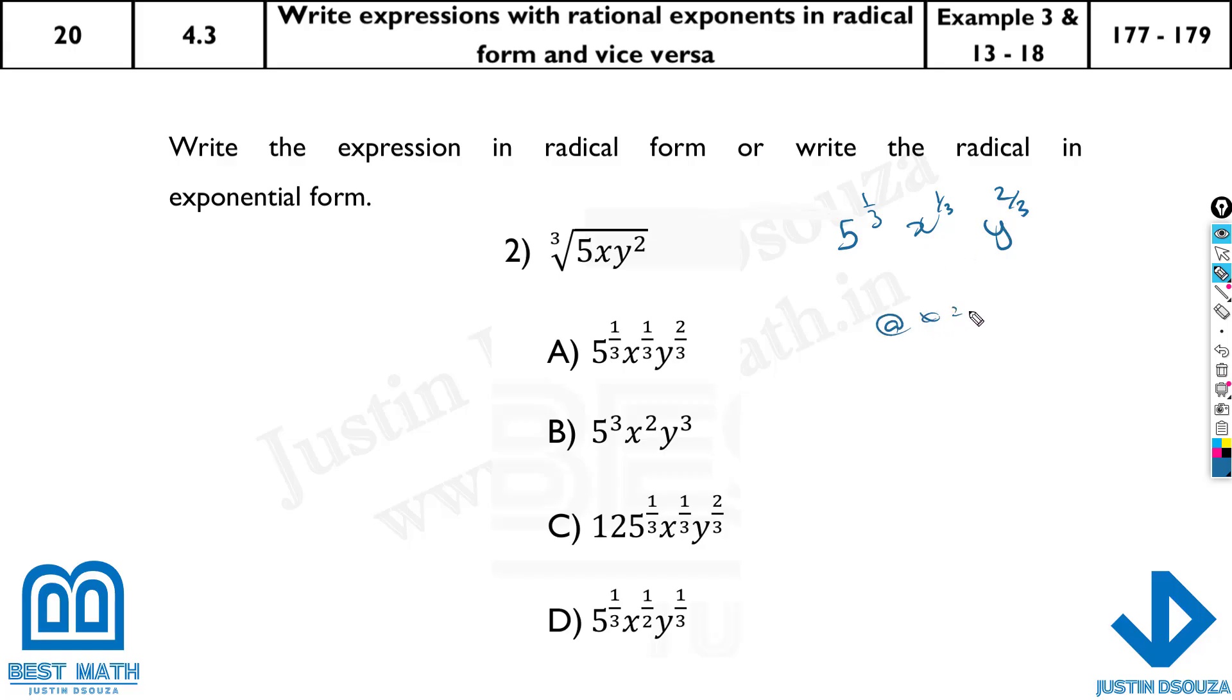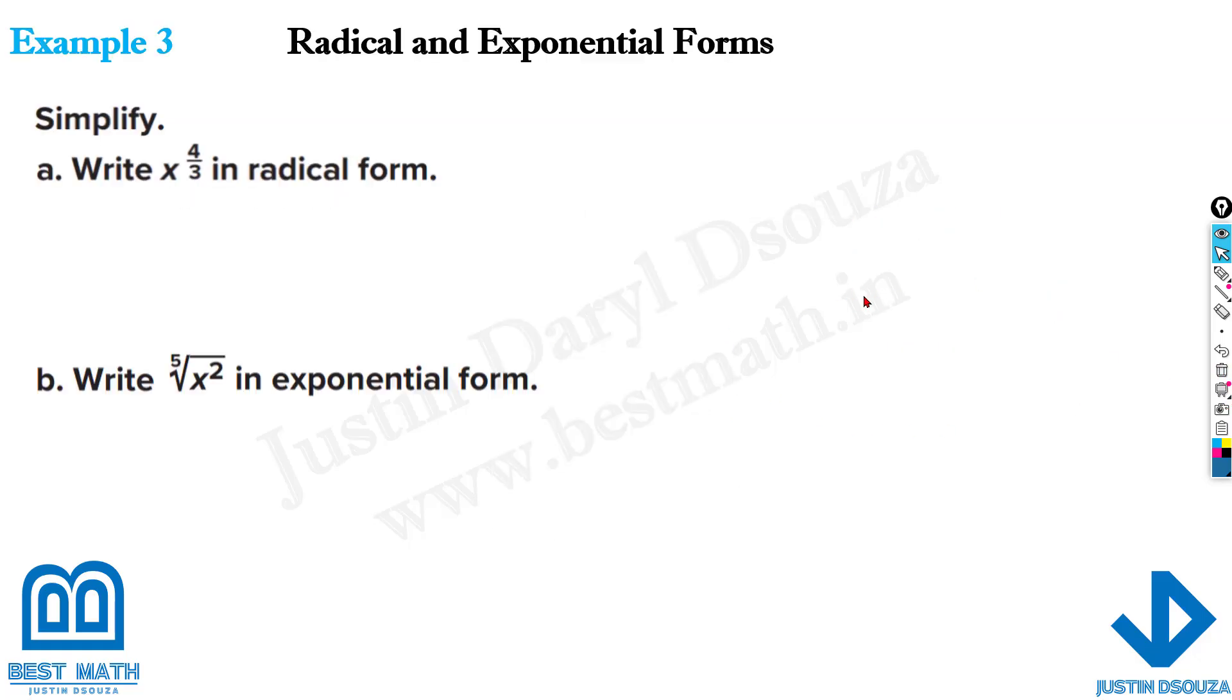Now you can assume x is equal to 2 and y is equal to 3, put the values here in the calculator and solve all of them. But this is such a simple problem you don't need to do that. Here, this is the correct answer, option A, because this is wrong, it's not to the power 3, not 125. This is correct. Here y is wrong because y already has a power 2. So only option A is correct, that is the correct answer.